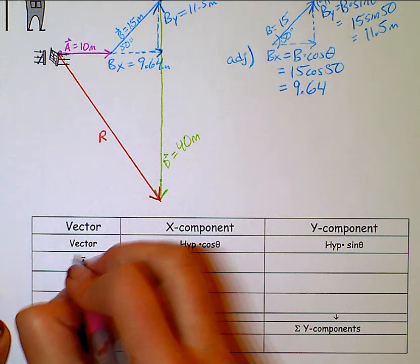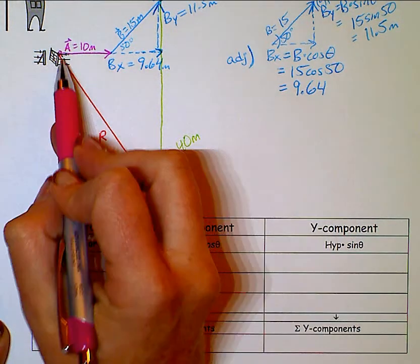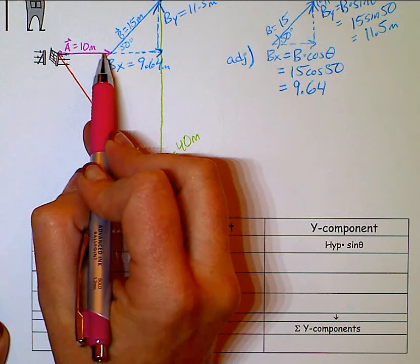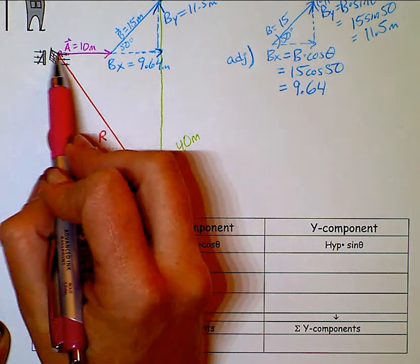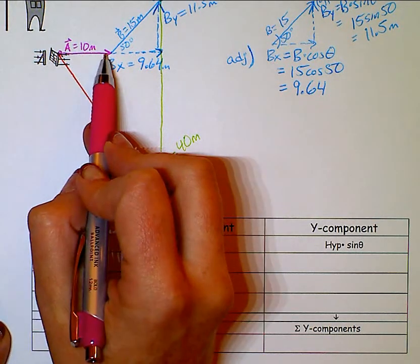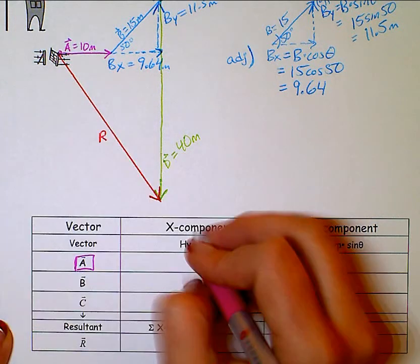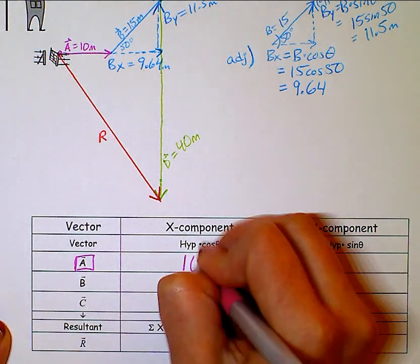A, just the pink vector alone. So I'm only talking about 10 meters due east. That is all horizontal. So it's all x. It doesn't go up or down. So the x component is just 10. All of that's in the x. And there's no y.